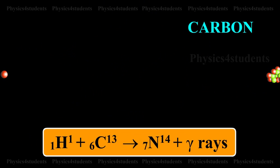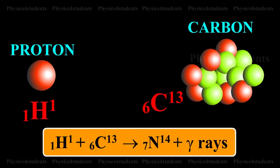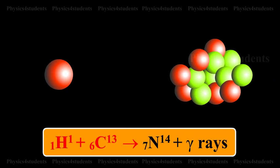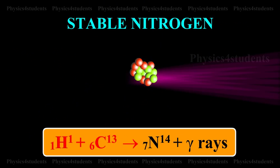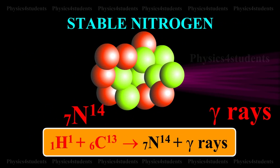The Carbon 6C13 combines with another proton, producing stable nitrogen with the release of gamma rays.